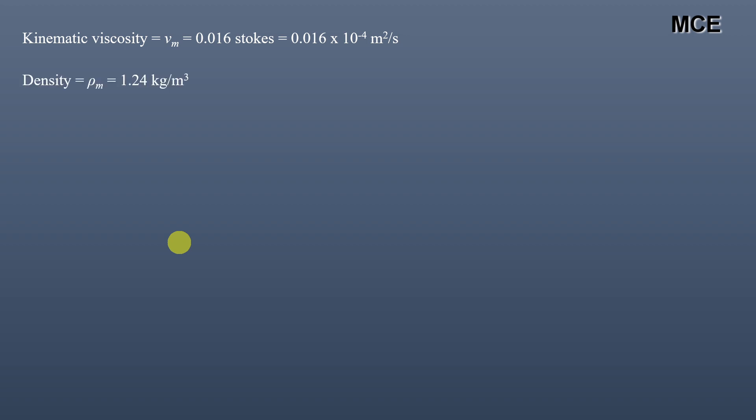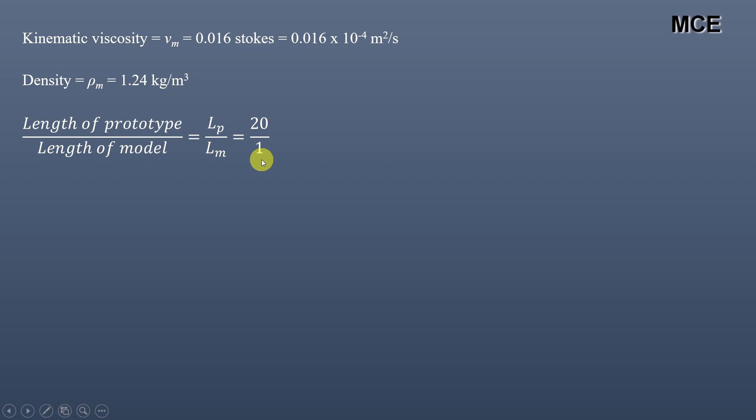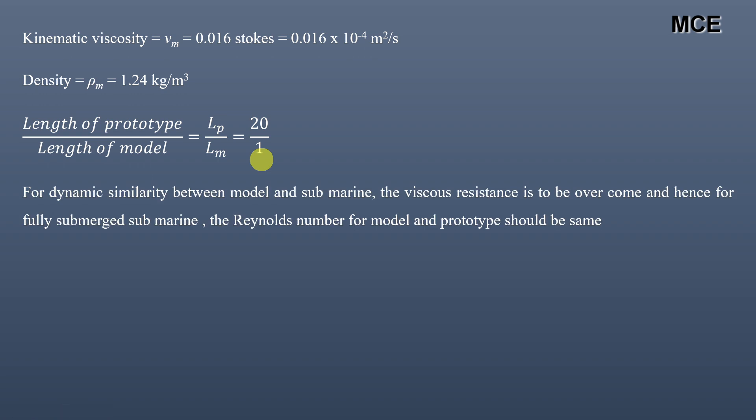The kinematic viscosity of air is 0.016 stokes, which equals 0.016 × 10⁻⁴ m²/s. The density of air is 1.24 kg/m³. The ratio of the length of the prototype to the length of the model, or the scale, is 20 to 1.